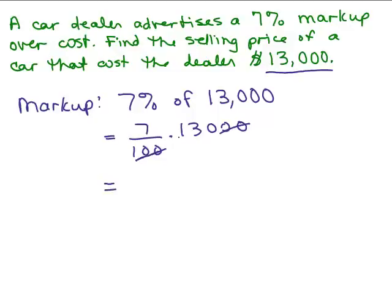So I just have 7 times 130. Again, you could use your calculator and get the same answer. But 7 times 13, I think that's 91, add the 0. So that is his markup, $910.